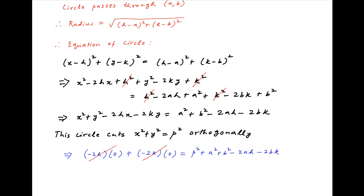The left hand side is equal to 0, and so we get 2ah plus 2bk is equal to p squared plus a squared plus b squared.